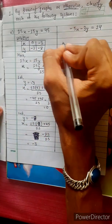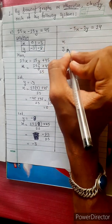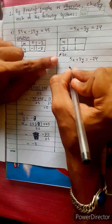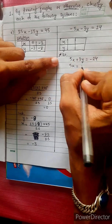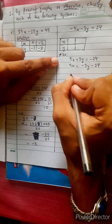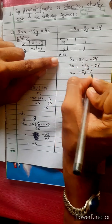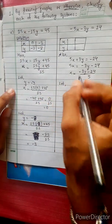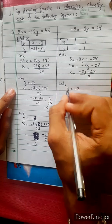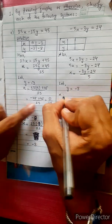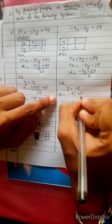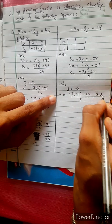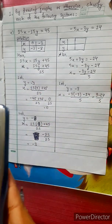Now that we can find x and y, let me set up the second equation: 5x plus 3y equals minus 24. So 5x equals minus 3y minus 24, meaning x equals minus 3y minus 24 divided by 5. When y equals minus 3, x equals minus 3 times minus 3 minus 24 divided by 5, which is 9 minus 24 divided by 5.